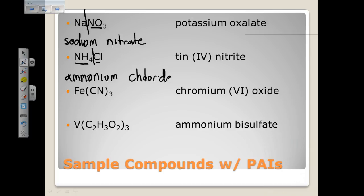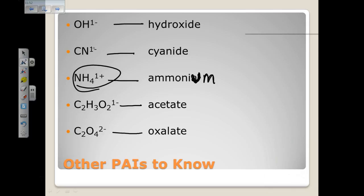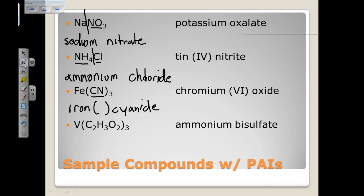For Fe(CN)3: the cation is iron, and cyanide is one of the ions we memorized — the charge on cyanide is one minus. We have three cyanides, so the total negative charge is three minus. There is one iron, so iron must have a charge of three plus. This is iron(III) cyanide.